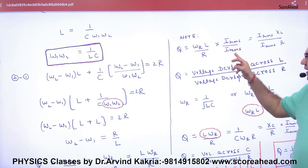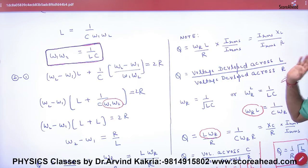Multiply and divide by I_RMS. What is L omega? XL. So what is I into XL? What is I into R? Voltage developed across inductor and voltage developed across resistor.